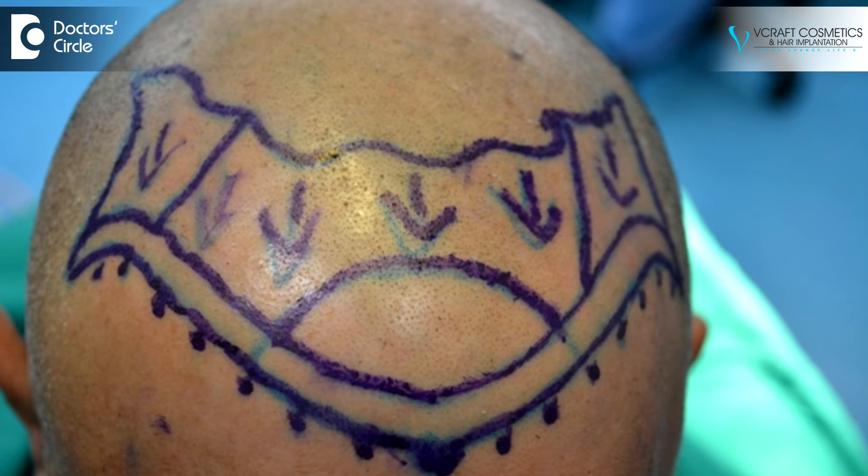Behind the hairline, 2.5 follicular unit grafts are used to provide a new hairline. Three or four hair units are used just further behind.